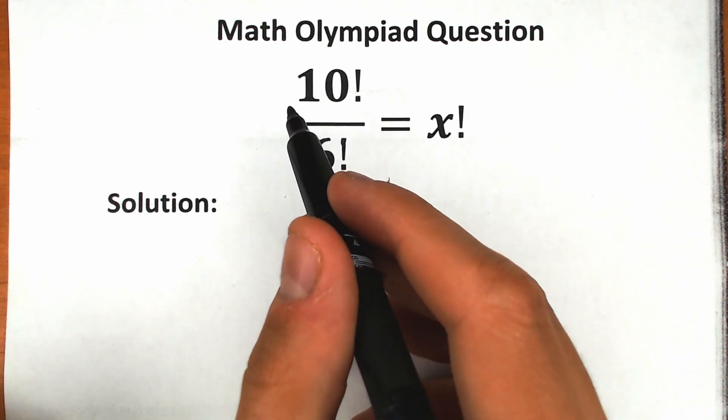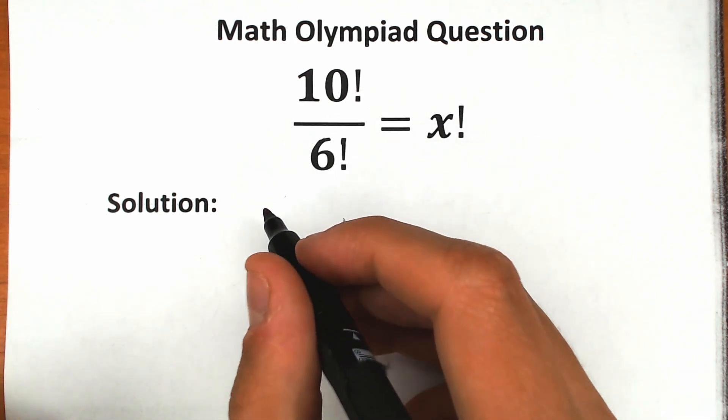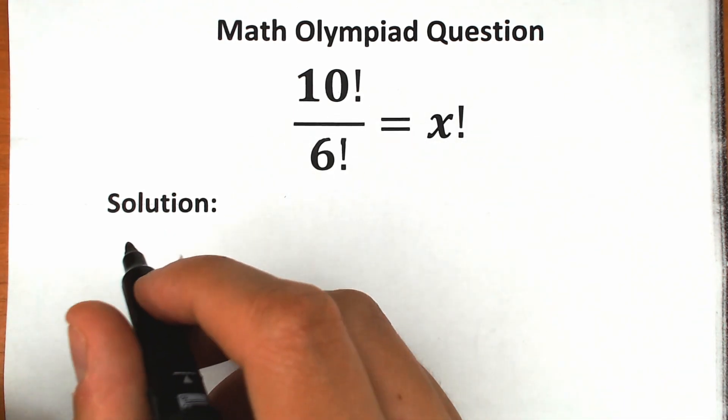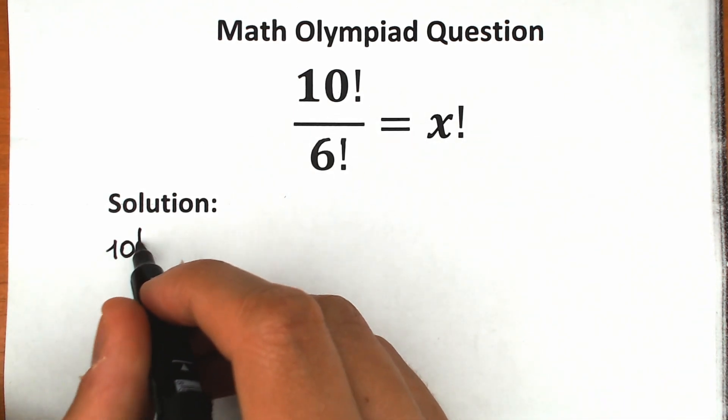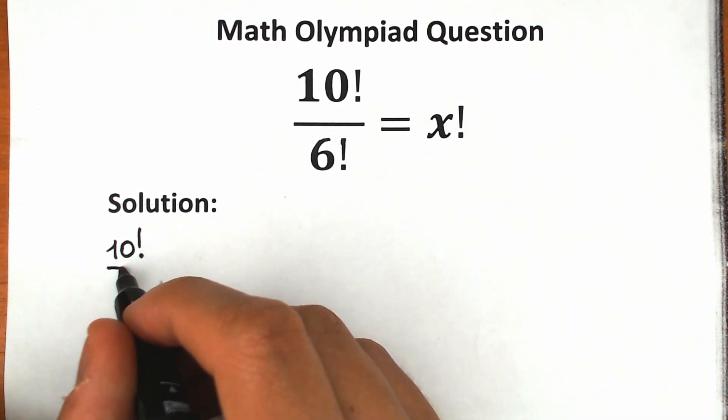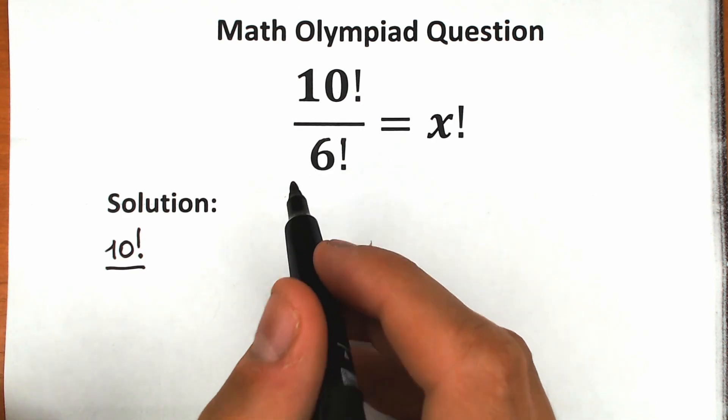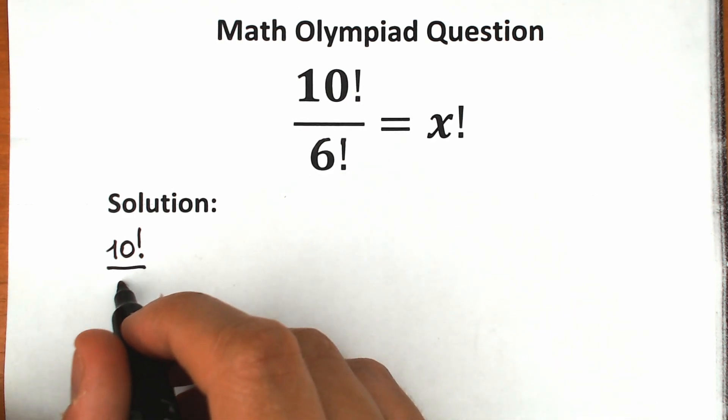First of all, right here we have 10 factorial in our numerator, and we divide this 10 factorial by 6 factorial.